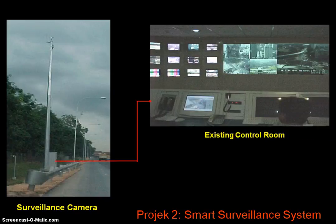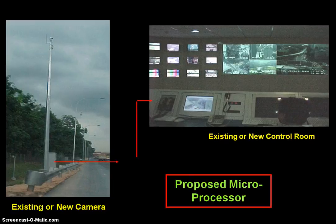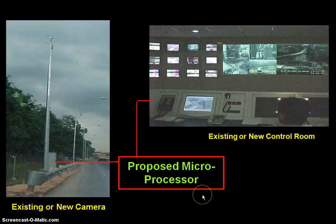For the surveillance system we use existing CCTV. The standard setup has the CCTV camera connected to the control center where managers can watch and observe the traffic situation. What we have done is add a microprocessor to the existing surveillance system to carry out image processing, count traffic volume, measure speed, and classify vehicles.